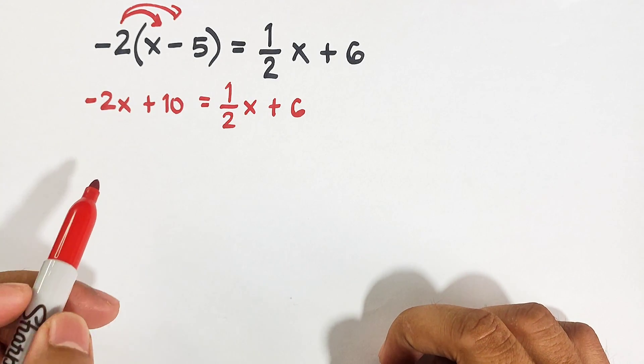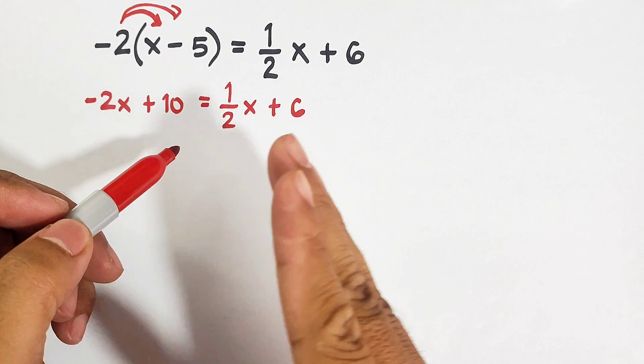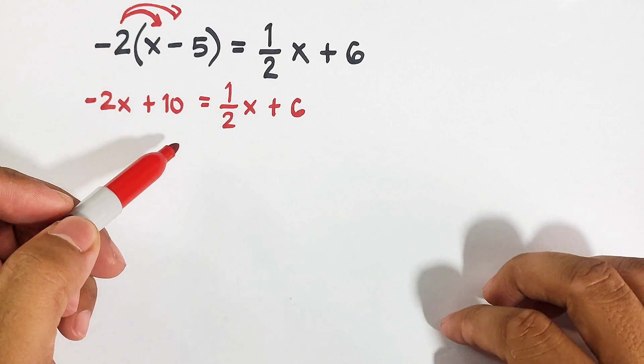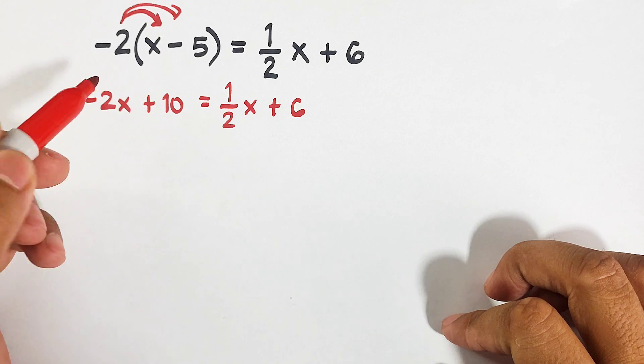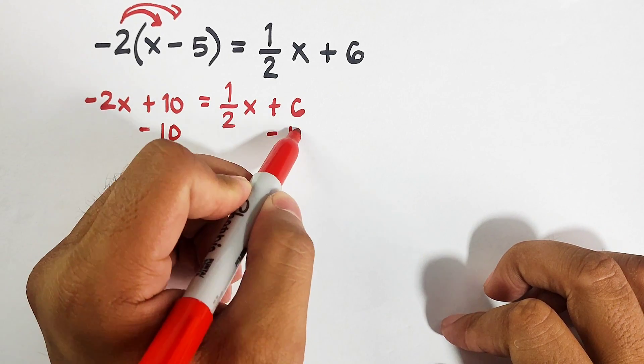First thing I need to do is I will eliminate plus 10 or positive 10. Our target here is to make this 10 to the right side of the equation. So how are we going to eliminate this positive 10? Simply subtract both sides of the equation by 10.